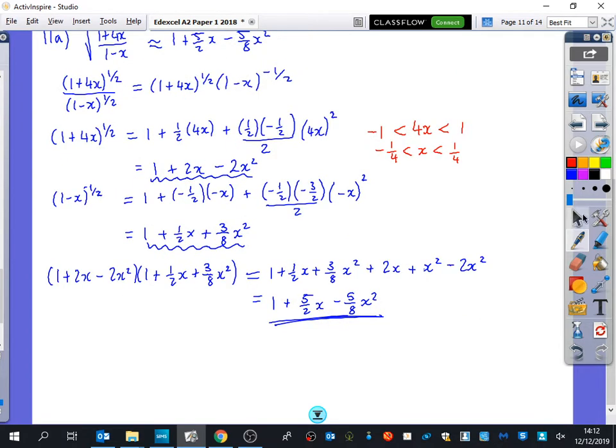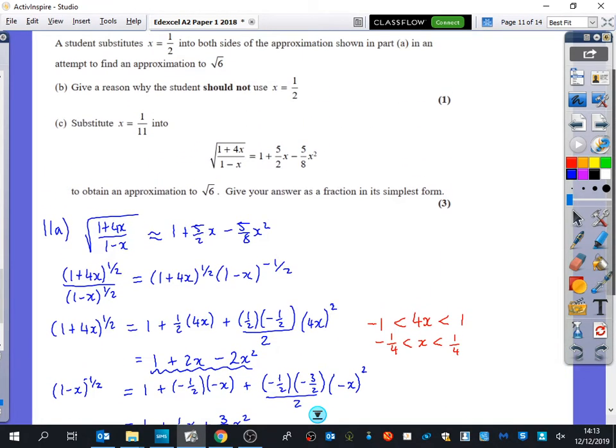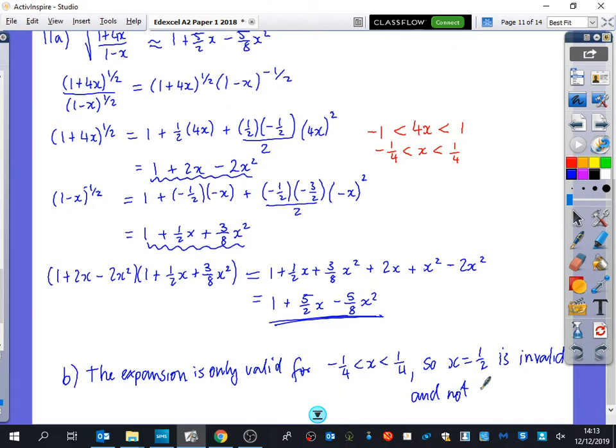So what we would need to say in part b of the question is this is not sensible. The expansion is only valid for x being between minus a quarter and a quarter. So x equals a half is invalid and is not suitable. Nearly there.